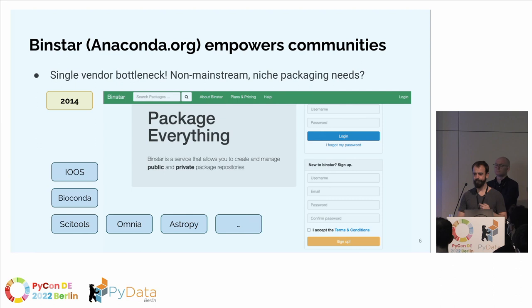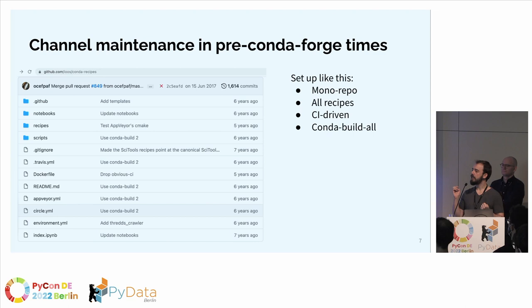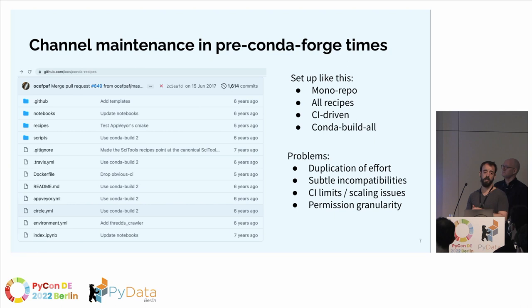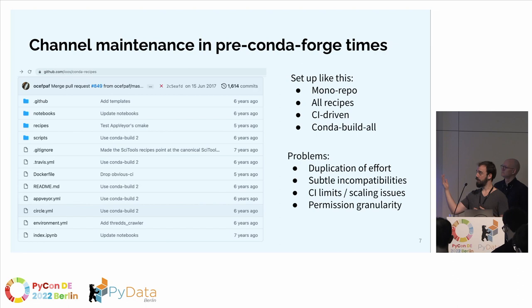This was nice but had problems. Sub-communities were using conda-build on a monorepo full of recipes, meaning every update required running everything. Travis CI and similar services were already available, working for small numbers of packages. But giving contributors permissions meant giving access to the full repository. Many channels led to duplication of effort, some packages maintained in several communities simultaneously with subtle incompatibilities. At scale, CI free tiers couldn't handle the full channel in a single hour.